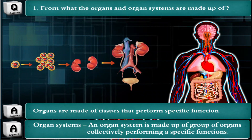Before we begin with the chapter, time to recall something that you have learnt last year. Organs are made of tissues that perform specific functions. An organ system is made up of a group of organs collectively performing a specific function. Tissues are made from cells, and organs are made from tissues. The tissues that make organs could be of different types.